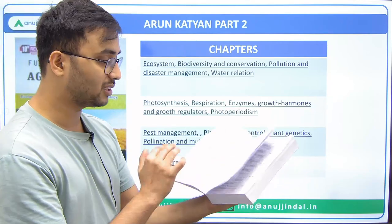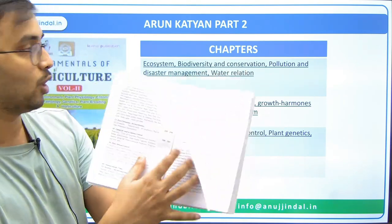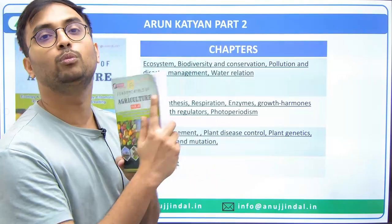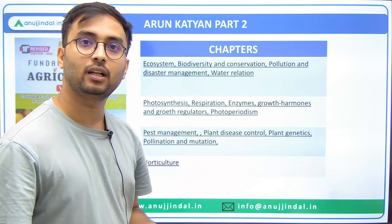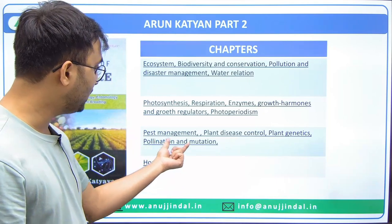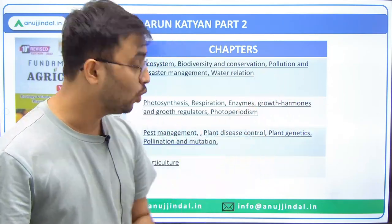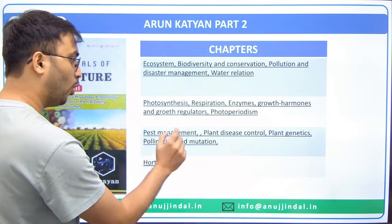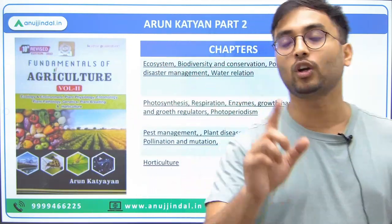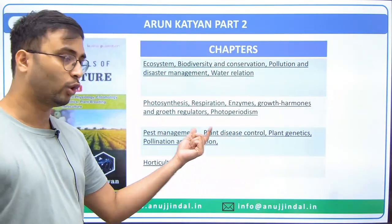If you think I'm giving random chapters, let me clarify — the chapters in volume two include ecosystem, biodiversity and conservation, and environmental topics. For pest management, disease control, plant genetics, pollination, and mutation: one to two questions always appear in ARD Phase 1 and Phase 2 related to plant diseases and pests. Still, selective reading is recommended here — for one or two questions you cannot read 50 to 60 pages. If you have sufficient time, read in depth; otherwise, read selectively.